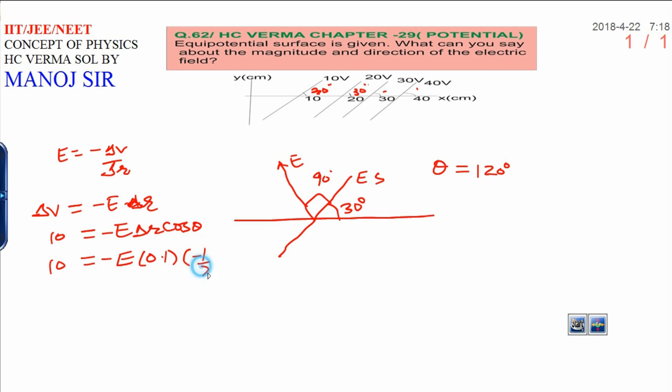into cos 120 degrees, which is minus half. And electric field can be written as negative negative becomes positive. 20 by 0.1, and electric field is now equivalent to 200 volts per meter.